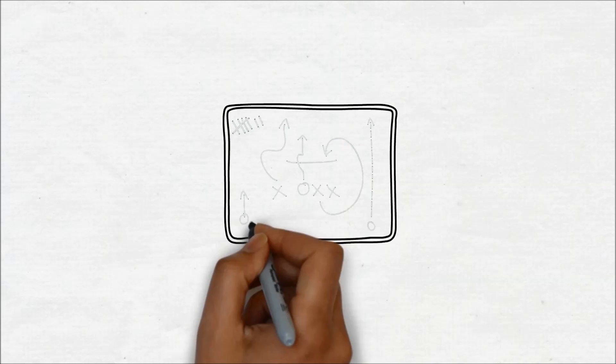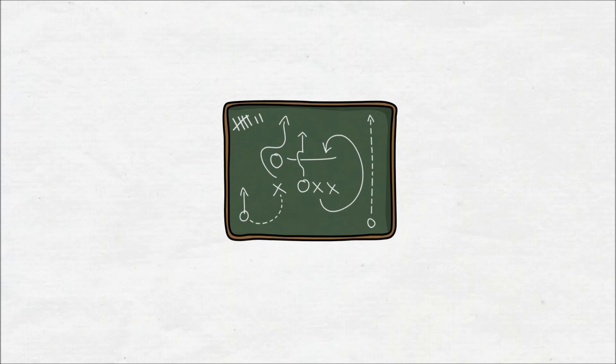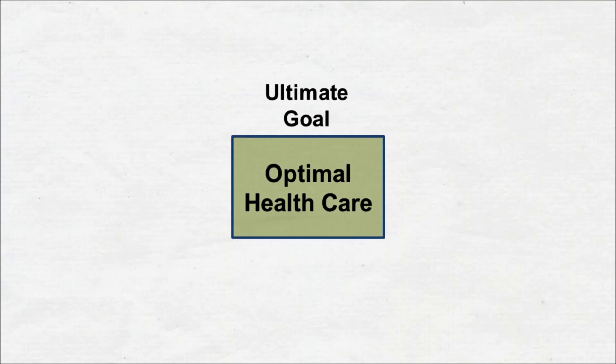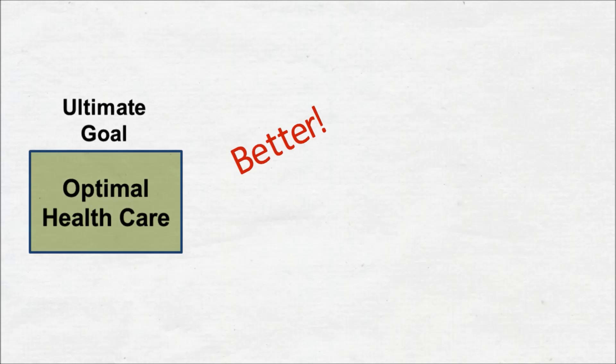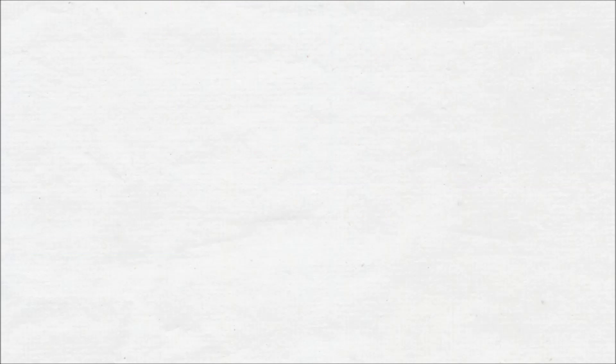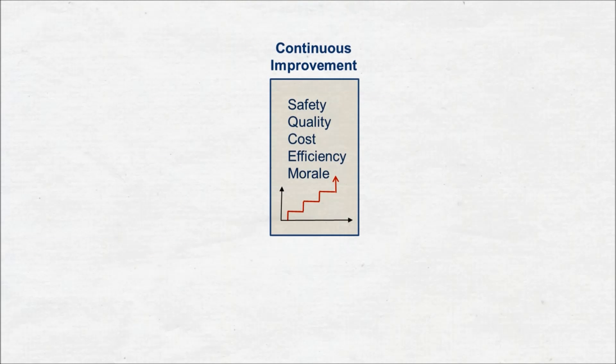We'll work our way backwards so that you can see how the ultimate goal is always achieved via the process. As you can see, the ultimate goal is optimal health care, which means better, faster, and more affordable care. The ultimate goal is reached through continuous improvement.